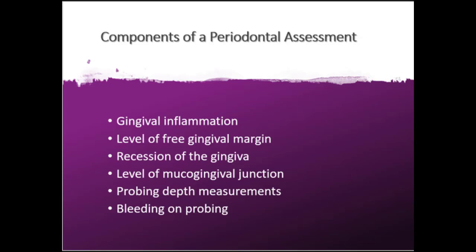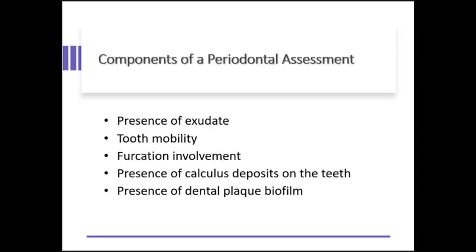The components of the periodontium that we will be looking at when we assess the patient's condition would be: gingival inflammation, level of free marginal gingiva, recession of the gingiva, level of the mucogingival junction, probing depth measurements, bleeding on probing, presence of exudate, tooth mobility, furcation involvement, the presence of calculus deposits on the teeth, and the presence of dental plaque biofilm.